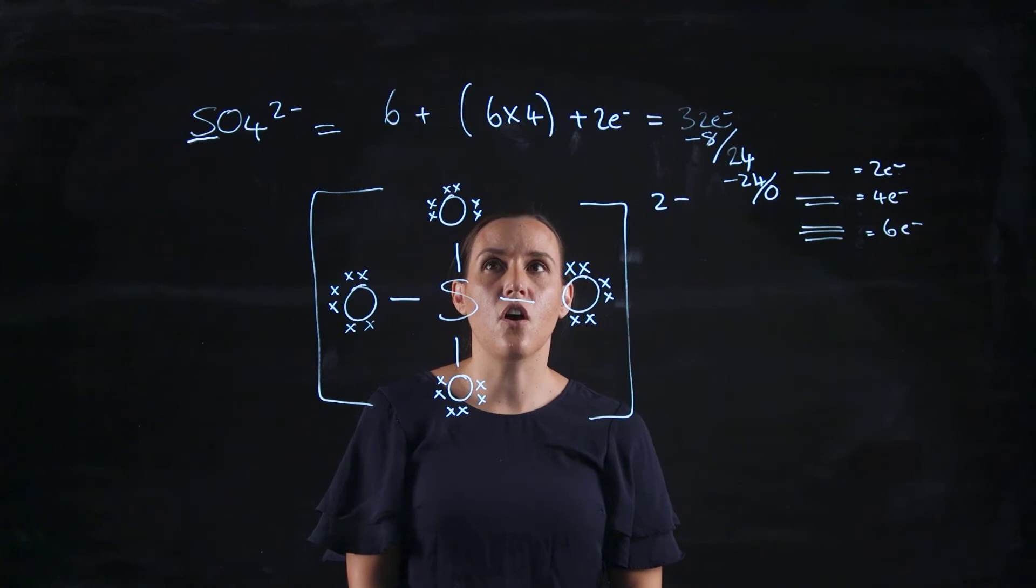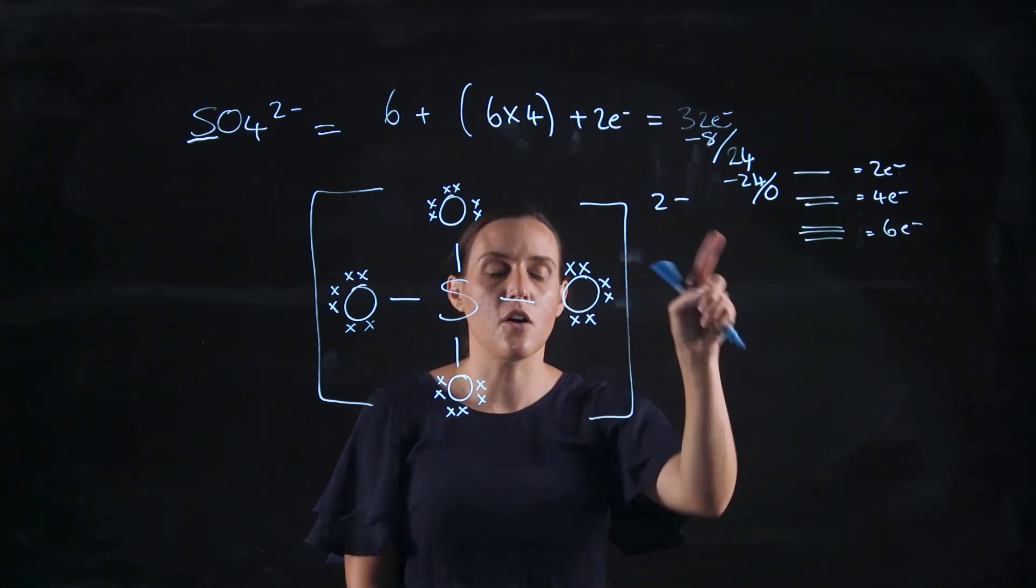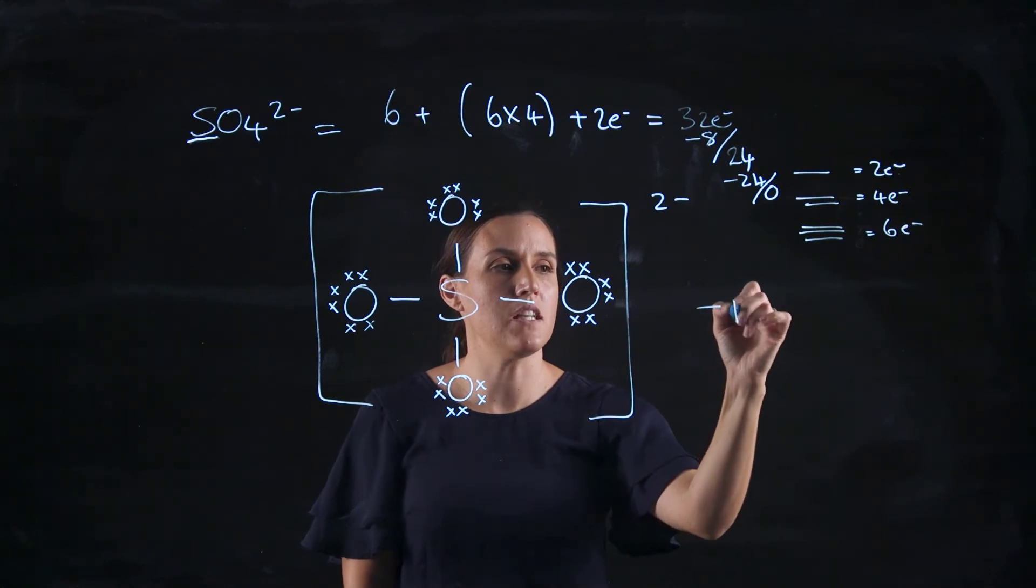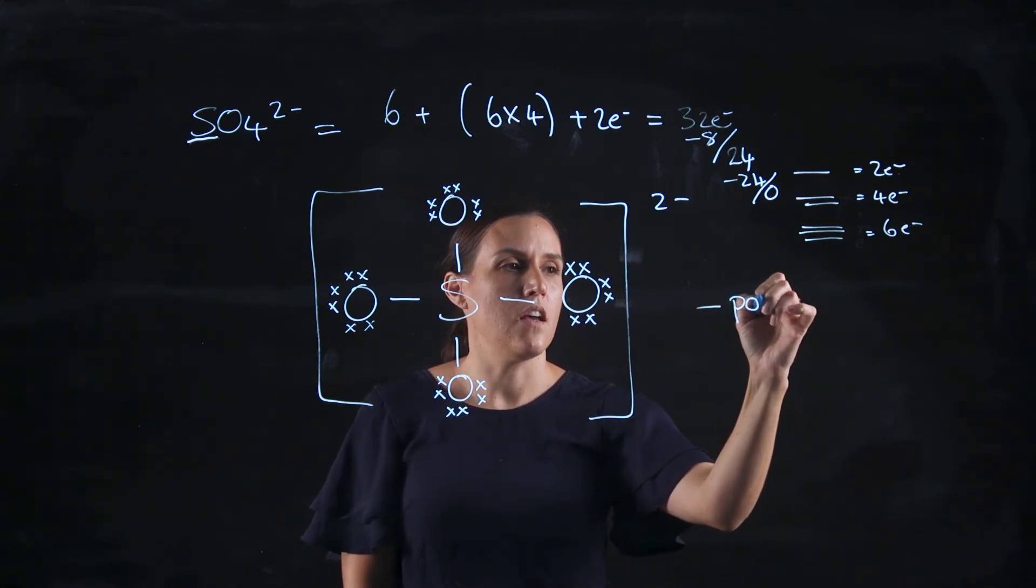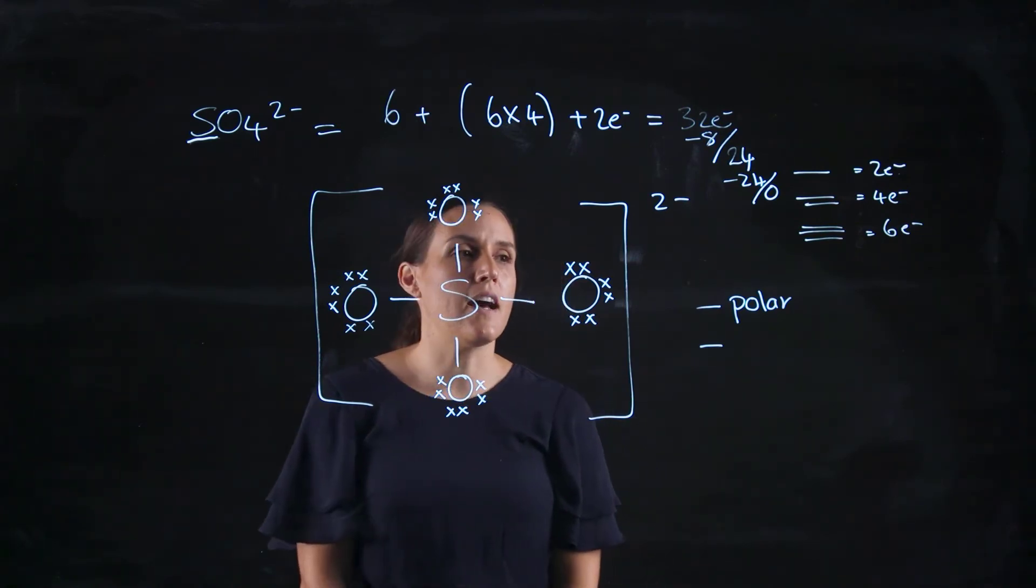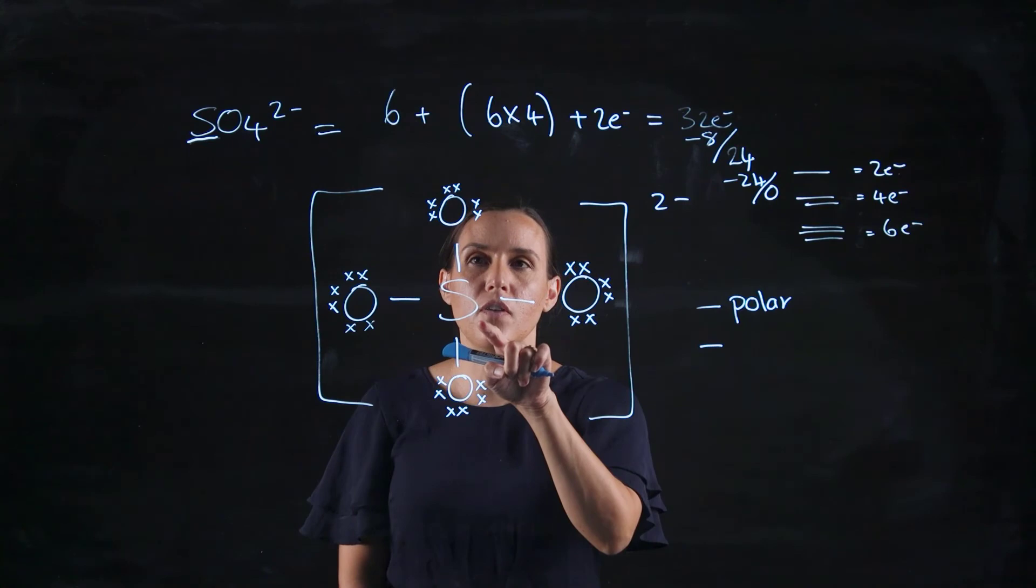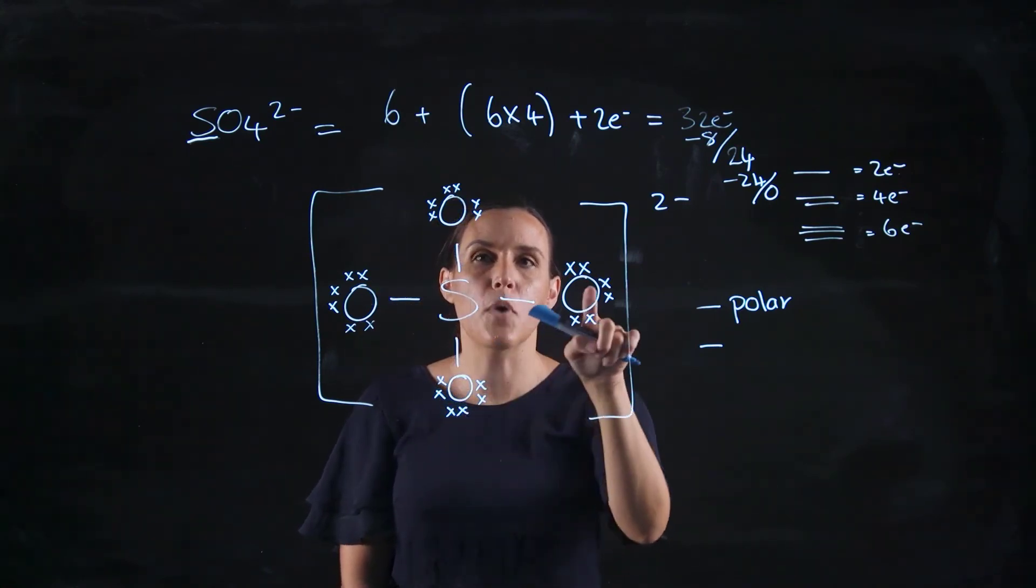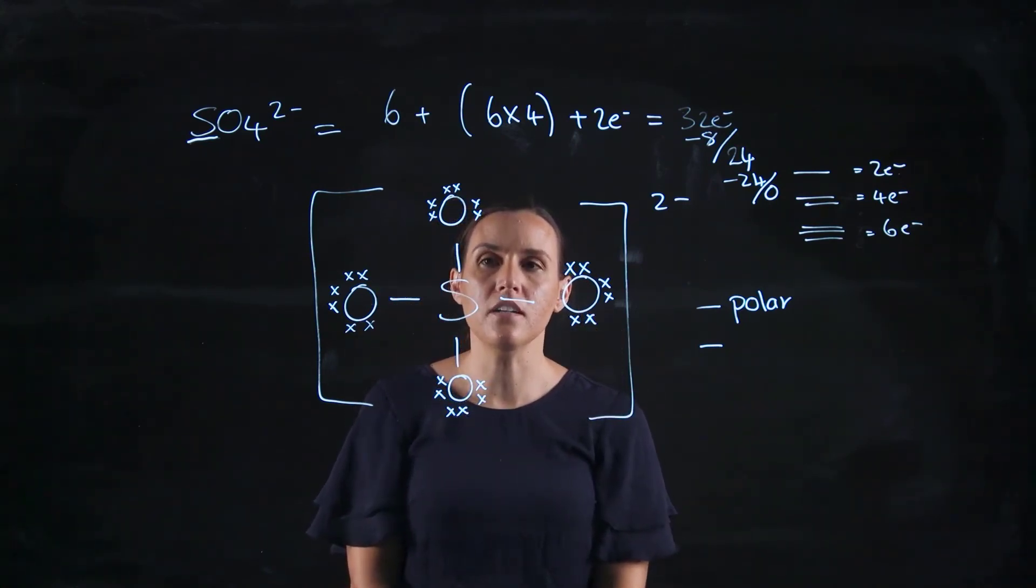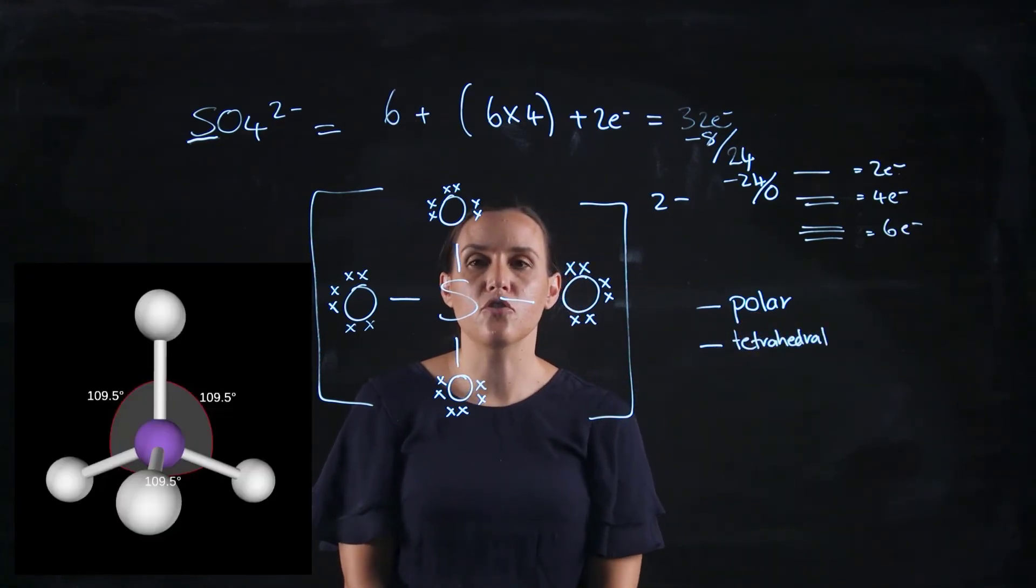So the charge on this means that this would be water soluble because it's an ionic compound. So it would, by default, be considered polar. So it would be water soluble. Now, looking at the shape here, I've got a central sulphur and four bonding atoms to that one. So it would be the tetrahedral shape.